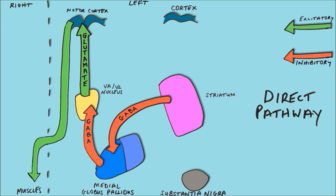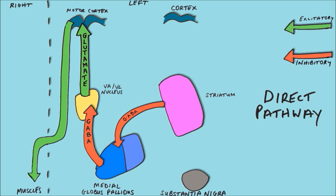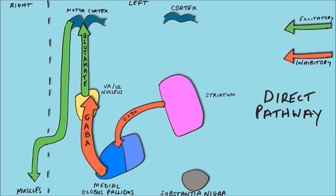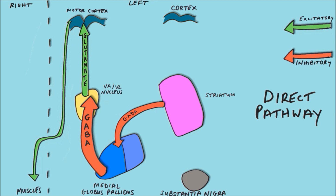Now let's see what happens if we reduce the activity of the striatum in the direct pathway. The reduced activity of the striatum means that it doesn't inhibit or suppress the medial globus pallidus as much, allowing it to get on with its job of inhibiting the VAVL nucleus more. This inhibition of the VAVL nucleus causes less excitation of the motor cortex and ultimately reduced motor output to the muscles of the body.